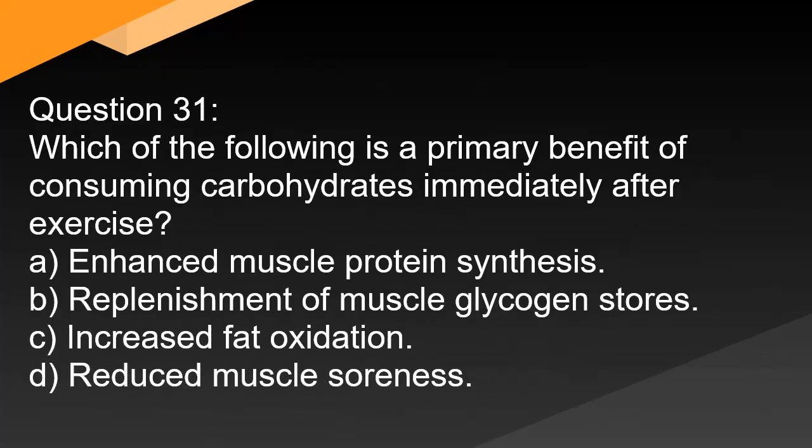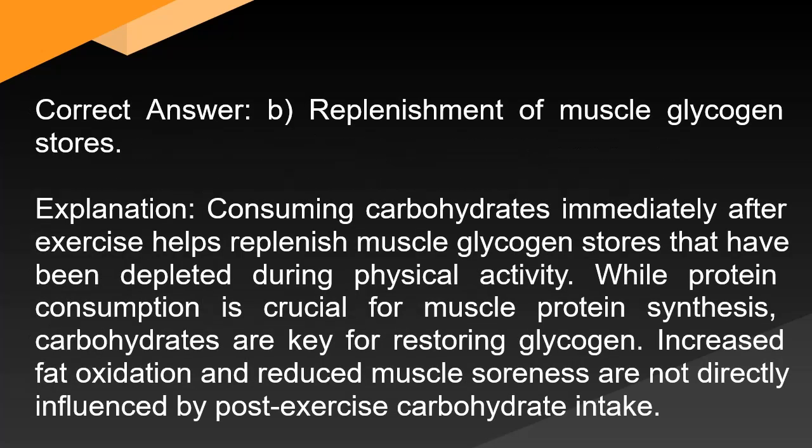Question 31: Which of the following is a primary benefit of consuming carbohydrates immediately after exercise? A. Enhanced muscle protein synthesis. B. Replenishment of muscle glycogen stores. C. Increased fat oxidation. D. Reduced muscle soreness. Correct answer: B. Replenishment of muscle glycogen stores. Consuming carbohydrates immediately after exercise helps replenish muscle glycogen stores that have been depleted during physical activity. While protein consumption is crucial for muscle protein synthesis, carbohydrates are key for restoring glycogen. Increased fat oxidation and reduced muscle soreness are not directly influenced by post-exercise carbohydrate intake.